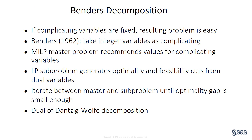Next, I'll describe an indirect approach that uses an optimization method called Bender's Decomposition. This method applies to problems for which fixing a set of complicating variables makes the resulting problem easy. In the original paper by Benders in 1962, considering MILP problems, he recommended taking the integer variables as complicating, because fixing all the integer variables leaves a linear programming problem over the remaining continuous variables. This LP is much easier than the original MILP. Bender's Decomposition involves a MILP master problem that recommends values for the complicating variables, and an LP subproblem that generates optimality and feasibility cuts for the master problem. The algorithm iterates between master and subproblem until the optimality gap is small enough. Bender's Decomposition is a dual of Dantzig-Wolfe Decomposition, which involves complicated constraints rather than complicating variables.